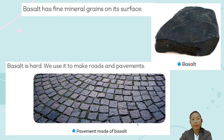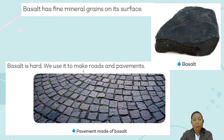The last igneous rock we'll cover is basalt. Basalt has fine mineral grains on its surface. Basalt is hard, and we use it to make roads and pavements. You can use it in your garden, on streets, or on roads, because it is a very hard kind of igneous rock.